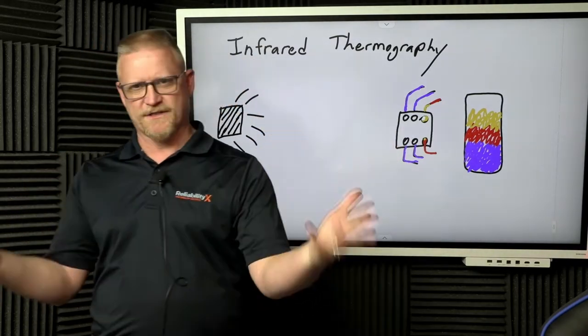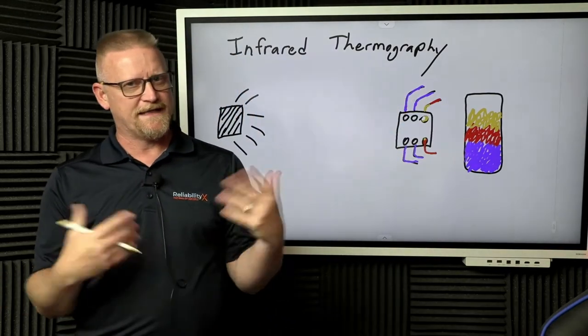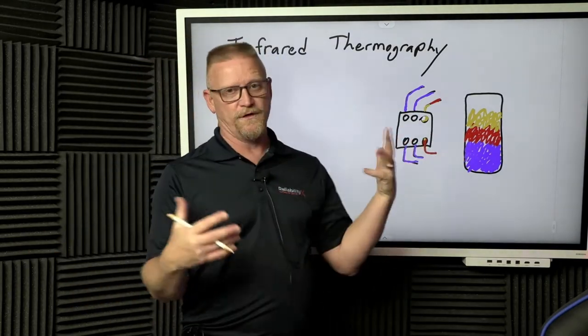like in this case, we've got just a regular terminal block, right? We can see some darker colors that typically indicate it is cooler. And as we get lighter through the spectrum, it means there's more heat.